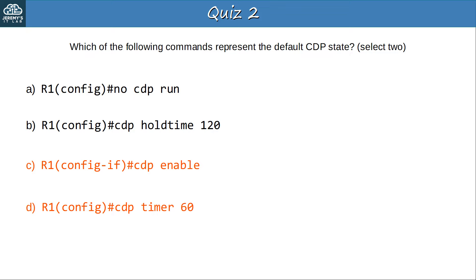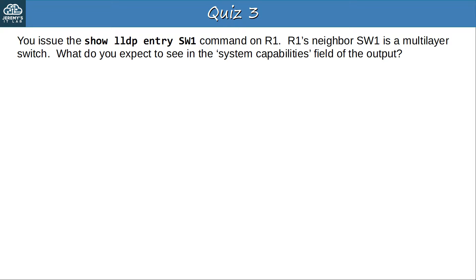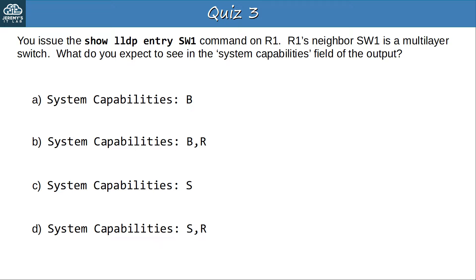Question 3: You issue the SHOW LLDP ENTRY SWITCH1 command on R1. R1's neighbor SWITCH1 is a multilayer switch. What do you expect to see in the SYSTEM CAPABILITIES field of the output? The answer is B — SYSTEM CAPABILITIES: BR. B is for bridge, which is another word for switch, and R is for router. Because SWITCH1 is a multilayer switch, it has the functionalities of both a switch and a router. S, as shown in options C and D, means switch in CDP, but it does not mean switch in LLDP.